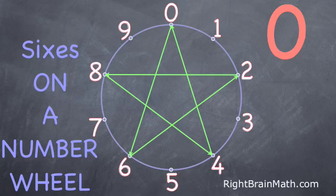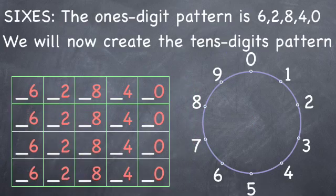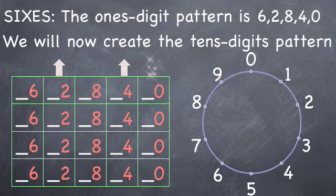For information about why, see the rule of tens in the Easy Times Table book. Now we can bring in our table with our repeating 6, 2, 8, 4, 0 in orange. We know that the tens go up each time we reach 2, 4, and 0.